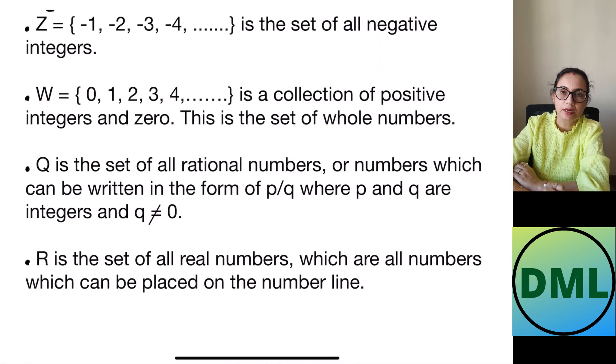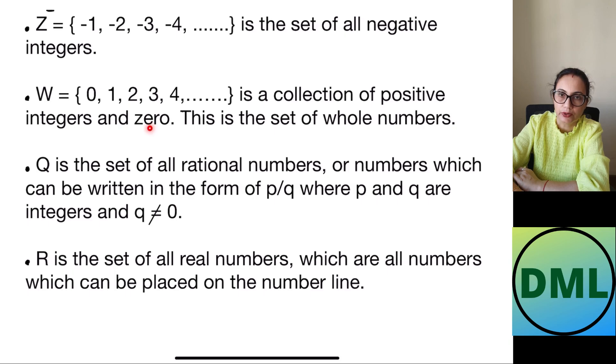We have W. What is W? W is a whole number. Whole numbers includes 0 also. So 0, 1, 2, 3, 4 inside the brackets is the collection of positive integers and 0 included. This is the set of whole numbers.